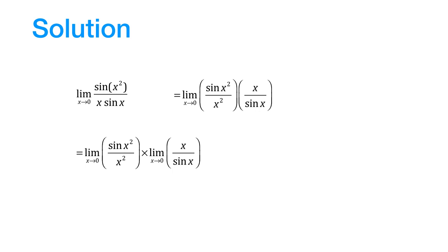Now also when x tends to 0, x squared would also tend to 0, which means each of these limits is equal to 1. And therefore it is 1 times 1 which is equal to 1. So the correct answer is option B.